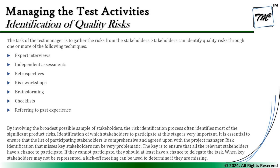The list should be agreed with the project manager since they are funding this activity. Risk identification that misses key stakeholders can be very problematic. All relevant stakeholders must have a chance to participate; if they cannot, they should at least delegate the task to someone else. When key stakeholders may not be represented, a kickoff meeting can help determine if anyone is missing. The delegate should be a person who will actively contribute, not just mark attendance — their replacement should be equally capable.